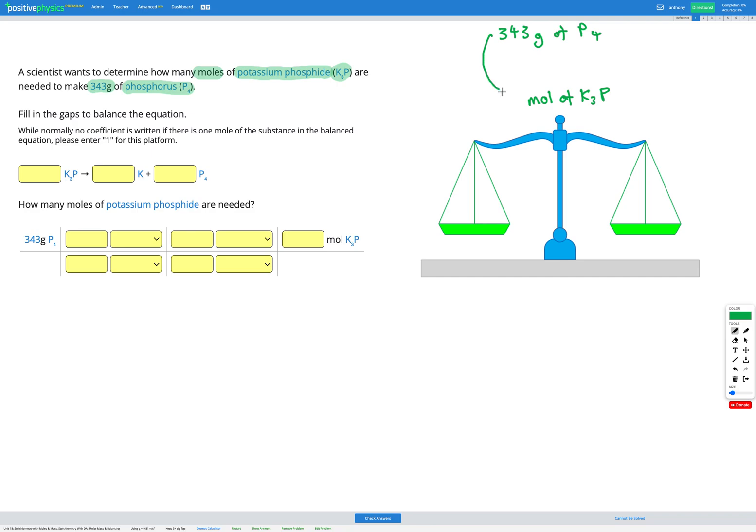And we need to find moles of K3P. That's our goal. Now, since we're given the number in grams to start with, we know we're going to have to convert that to moles before we can use our conversion factor from the balanced equation. So we're going to first get from grams of P4 into moles of P4. That's going to be our first step. Then we can convert from moles of P4 to moles of K3P using the conversion factor we'll get from a balanced equation. So then we can do our second step.